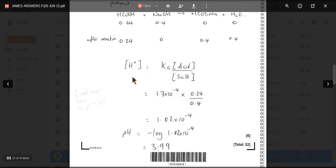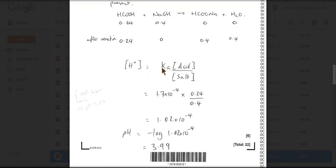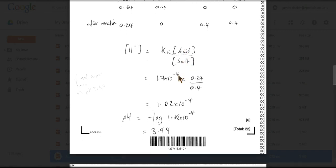So the H plus of a buffer is, I've got this silly way of remembering, cast it over salt. If you've seen the video, you'll know what I'm talking about there. So Ka times the acid concentration over the salt concentration. So we've got all these numbers now. We just stick them into this expression and we get an H plus concentration of that. We minus log that and we get to two decimal places. The buffer pH is 3.99.